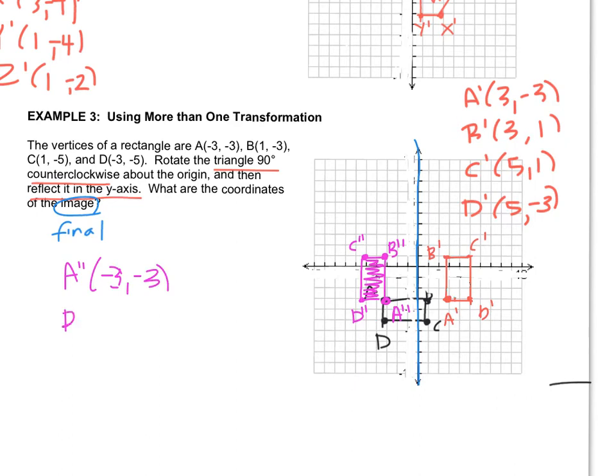B double prime is at negative 3, 1. C double prime is at negative 5, 1. And D double prime is at negative 5, negative 3. Alright, let's move on.